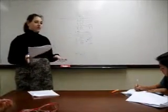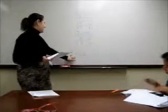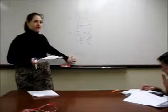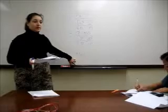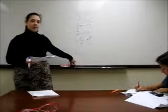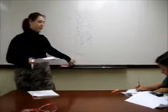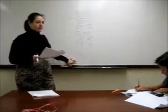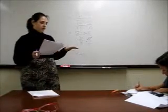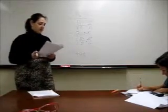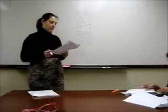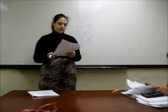Before we even look it up, we know — because that's a lot bigger than two — we probably will reject the null at an alpha equals 0.05 level. But let's look it up and find out what our p-value is exactly. What can we say about the p-value? Do we reject or accept the null hypothesis?